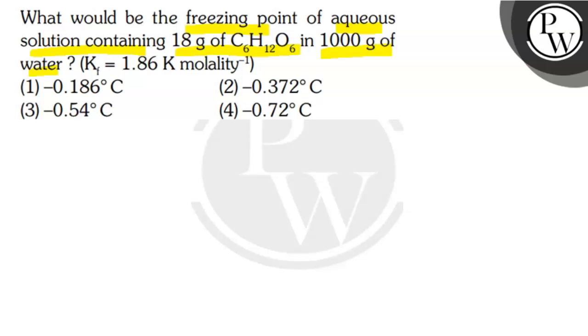And the options are option 1 minus 0.186 degrees Celsius, option 2 minus 0.372 degrees Celsius, option 3 minus 0.54 degrees Celsius, option 4 minus 0.72 degrees Celsius. What is the key concept here?